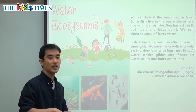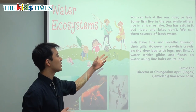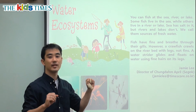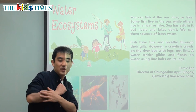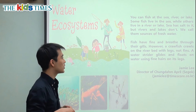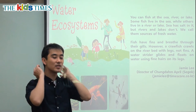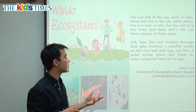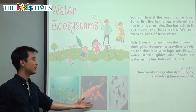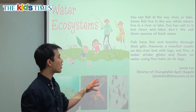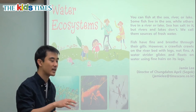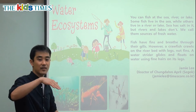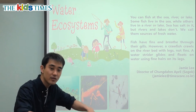Fish have fins and breathe through their gills. People — you and me — we have arms, fingers, and hands, but fish don't have that. They have something called a fin, which helps them swim, and they breathe through their gills. However, a crawfish — it looks like some sort of shrimp — crawls on the river bed with legs, not fins. So fish have fins, but crawfish have legs, so they crawl on the floor.